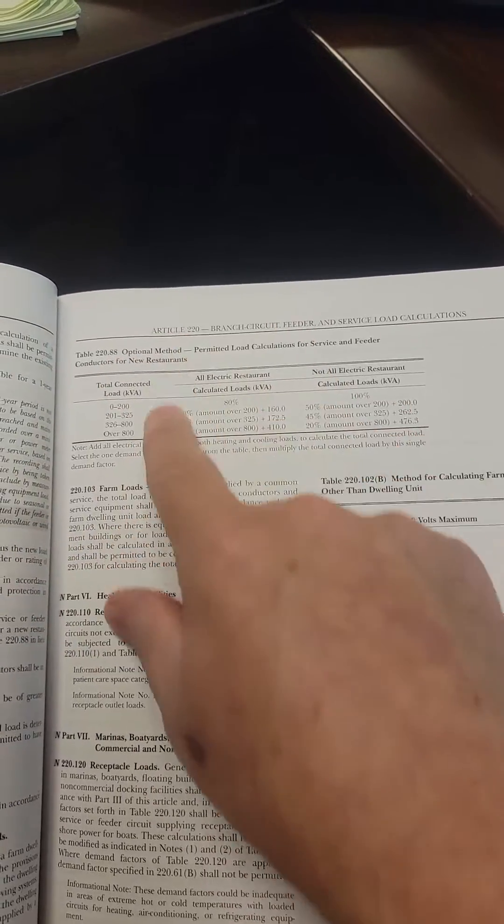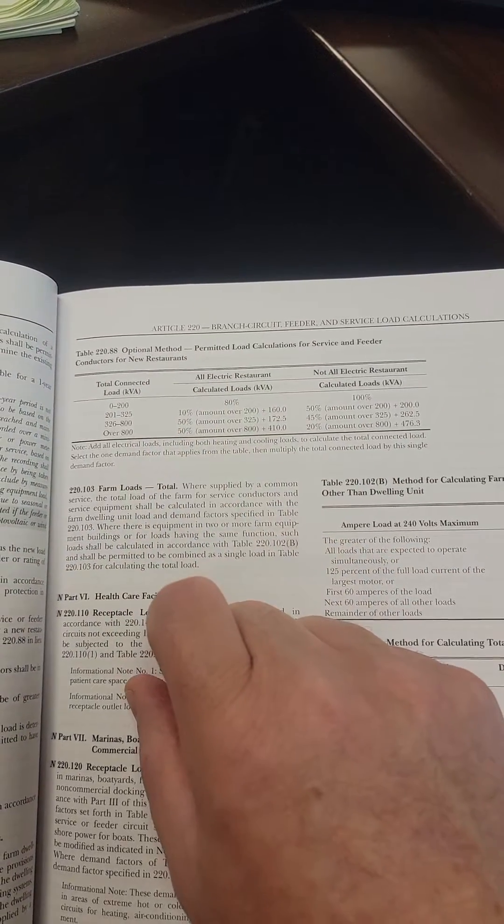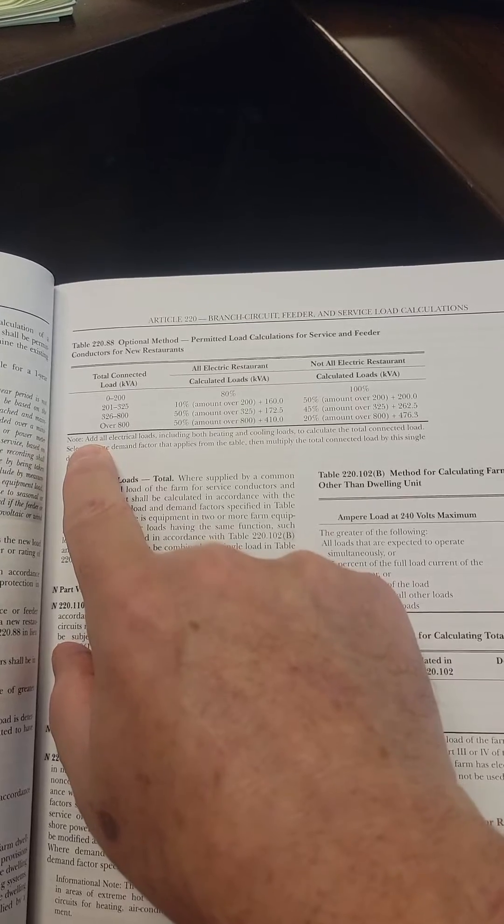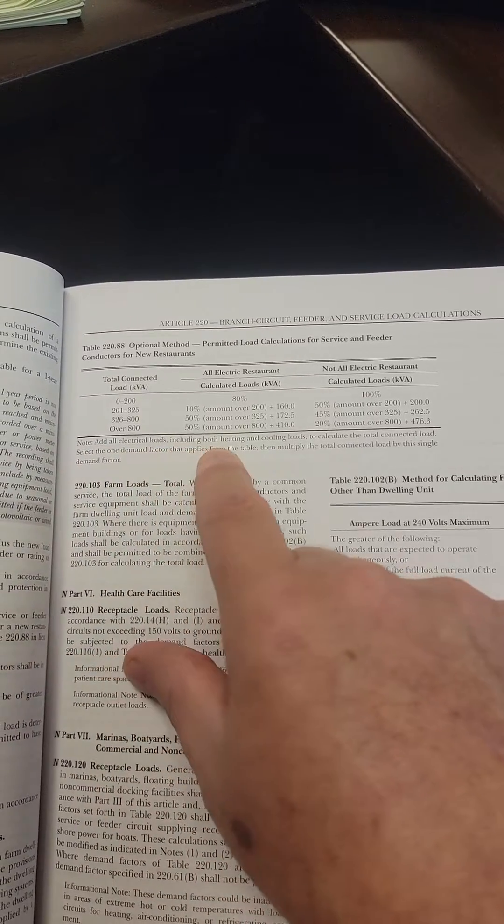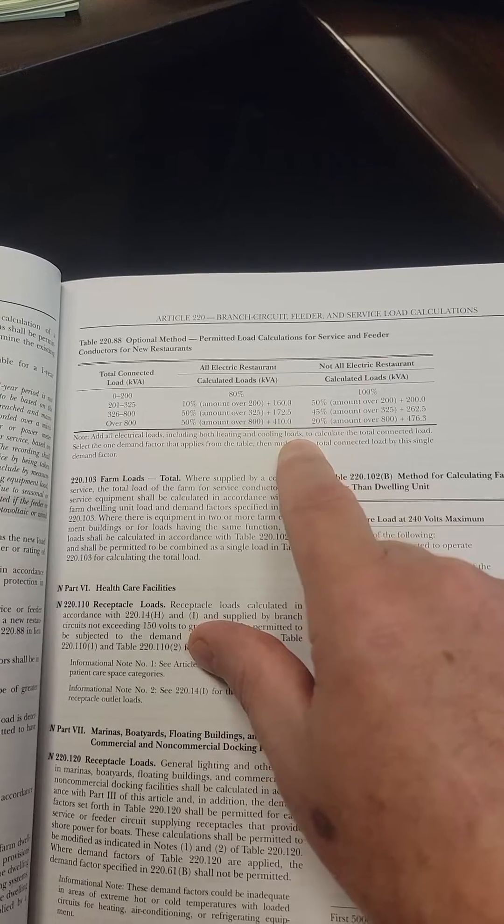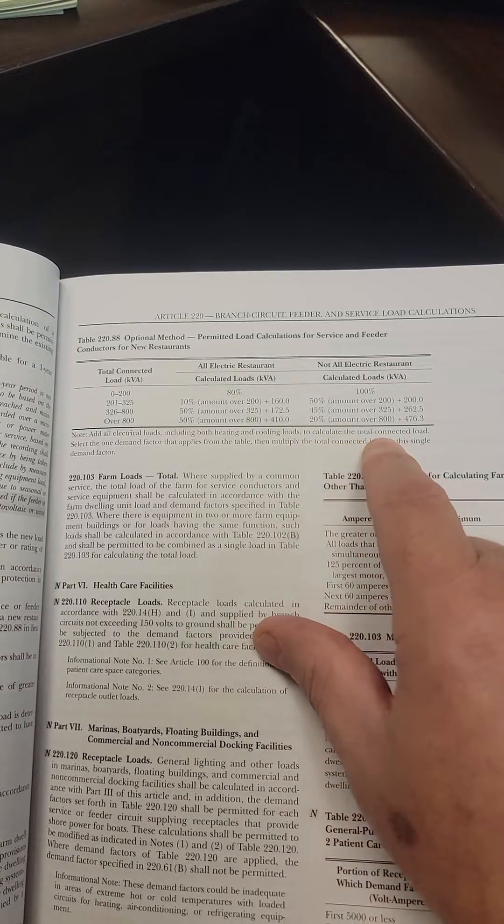Again, a lot of confusion when it comes to this. So also remember there is a note here that says, add all electrical loads, including both heating and cooling loads, to calculate the total connected load.